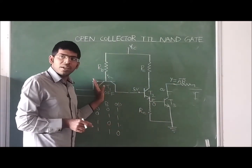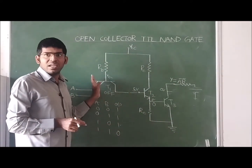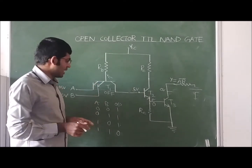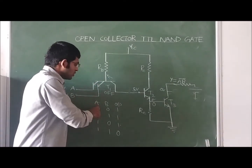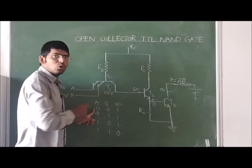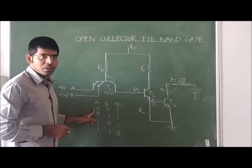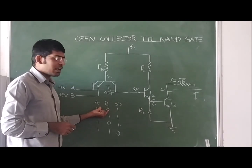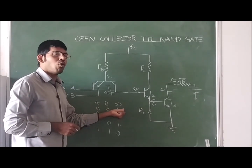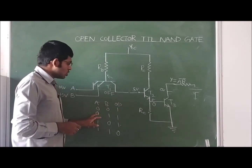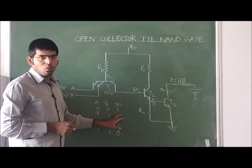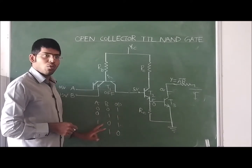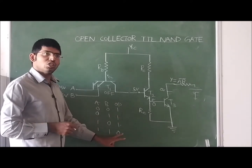Now we are discussing the operation of the Open Collector TTL NAND gate. First, the truth table: input 0,0 → output 1; input 0,1 → output 1; input 1,0 → output 1; input 1,1 → output 0.